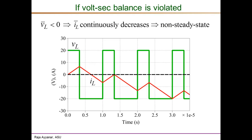Now consider a different switching waveform applied to the same inductor, keeping the on and off interval durations the same. During the on interval, 20 volts is still applied, but during the off interval, instead of −10 V, we apply −20 volts. Clearly, volt-second balance is not satisfied: 20 × (1/3) + (−20) × (2/3) = −20/3. So VL average equals −20/3, which is not zero — volt-second balance is violated.